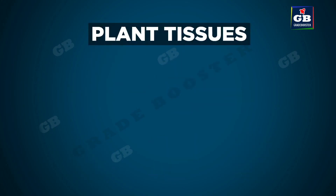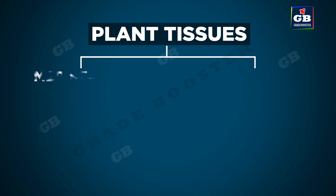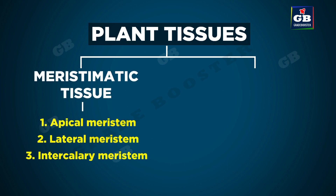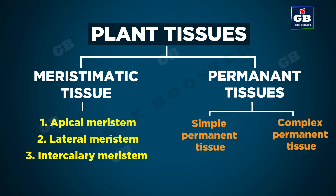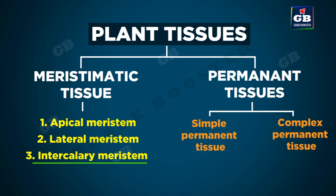Plant tissues are mainly divided into two groups. The first one is meristematic tissue and the second one is permanent tissue. Meristematic tissue is of three types: apical meristem, lateral meristem, and intercalary meristem.